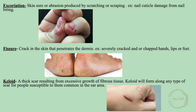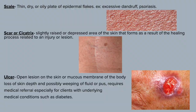A keloid is a thick scar resulting from excessive growth of fibrous tissue. Keloids form along any type of scar in people susceptible to them and are common in the ear area. A scale is a thin, dry or oily plate of epidermal flakes; example: excessive dandruff or psoriasis. A scar, or cicatrix, is a slightly raised or depressed area of the skin that forms as a result of the healing process. An ulcer is an open lesion on the skin or mucous membrane — loss of skin, possibly weeping fluid or pus — and requires medical referral.